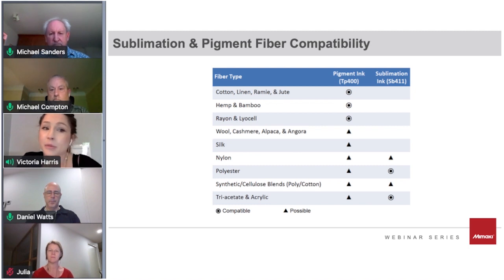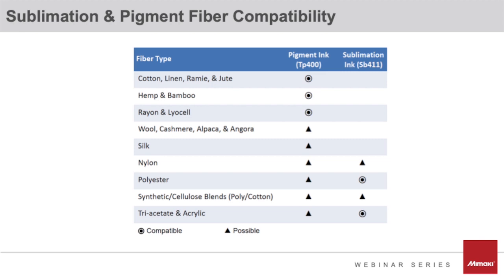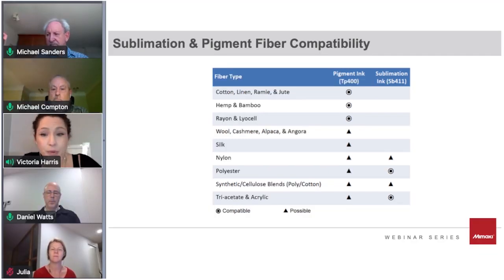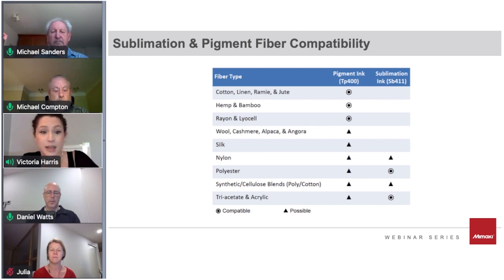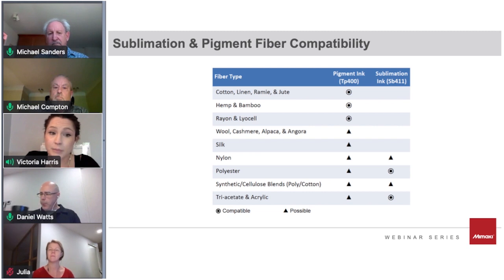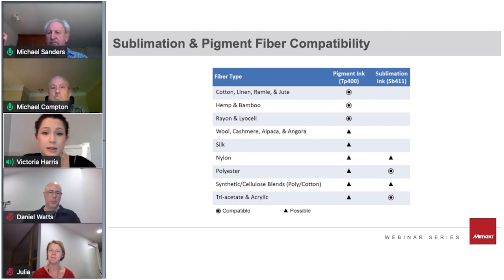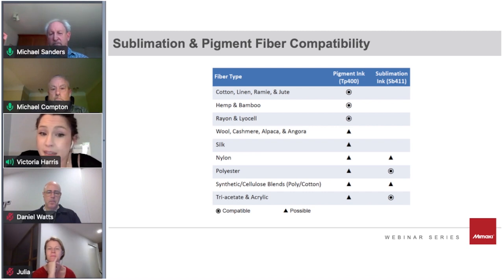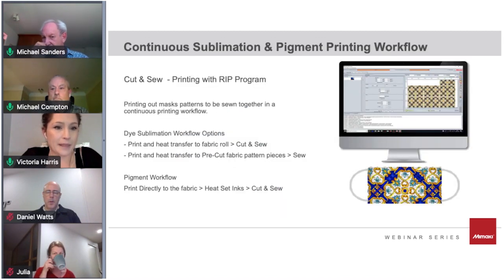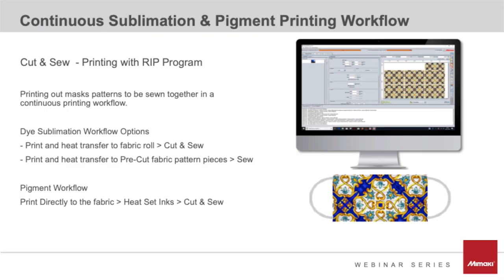This is the sublimation ink and pigment ink fiber compatibility chart. Pigment inks have the most affinity for natural fibers such as cotton, linen, bamboo, hemp, and rayon. It's possible to print protein fibers like wool and silk, synthetic nylon, and other synthetics like polyester and acetate, but pigment has the greatest attraction for natural fibers — especially untreated textiles. For wool, silk, and synthetics with pigment inks, pre-treating the textile before printing is recommended. Sublimation ink has the most success with polyester but also works on other synthetic fibers.